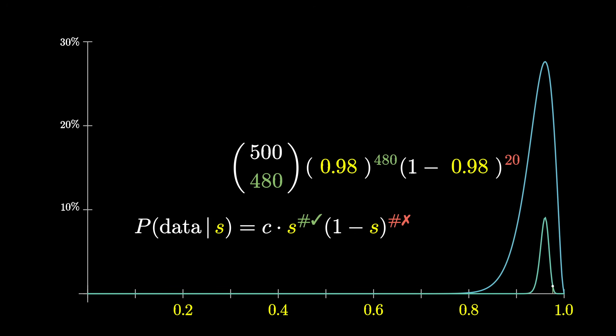There is a lingering question though, of what to actually do with these curves. Our goal is to compute the probability that you have a good experience with this seller, so what do you do? Naively, you might think that probability is 96%, since that's where the peak of the graph is, which in a sense is the most likely success rate.